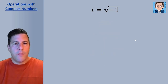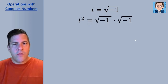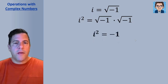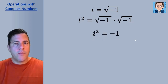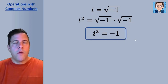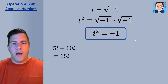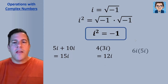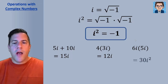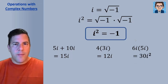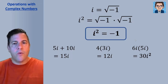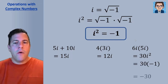An important concept when doing operations with complex numbers is i squared. If i is the square root of negative 1, then i squared equals the square root of negative 1 times the square root of negative 1, which equals negative 1. We treat i just like any other variable: 5i plus 10i gives 15i, and 4 times 3i gives 12i. But with 6i times 5i, we get 30i squared — and since i squared equals negative 1, we replace it to get 30 times negative 1, or negative 30.